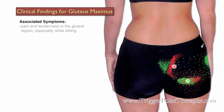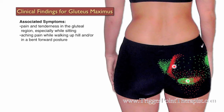The clinical findings for gluteus maximus trigger points: Dr. Travell refers to the gluteus maximus as the swimmer's nemesis muscle. Clients with trigger points here may complain of pain and tenderness in the gluteal region, especially while sitting, aching pain while walking uphill and or in a bent forward position, and as its nickname implies, cramping during swimming.